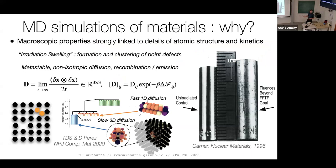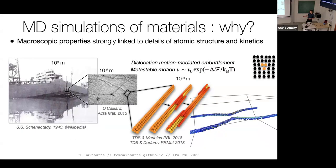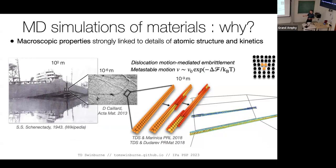Why do we want to run accelerated MD? One motivation is nuclear materials — the production of point defects leads to swelling, causing numerous problems in nuclear reactors. We want to understand how these very complicated defect structures move around, with slow metastable thermally activated diffusion mechanisms that are not isotropic. We can also look at dislocations — here is an example of dislocation motion-mediated fracture in steels, where motion of the dislocation line is a thermally activated process, a soliton kink mechanism.